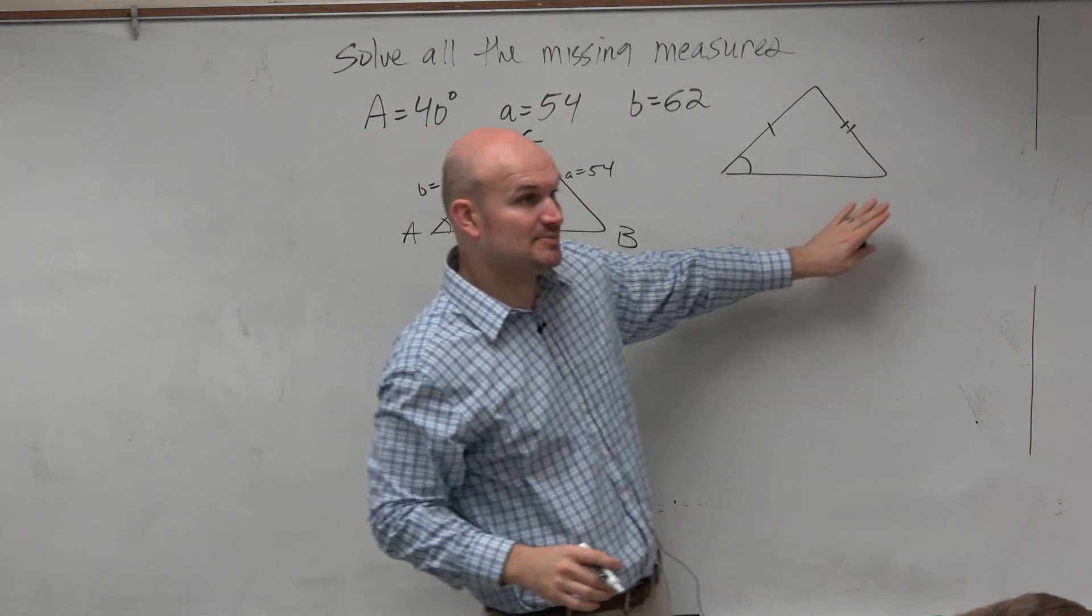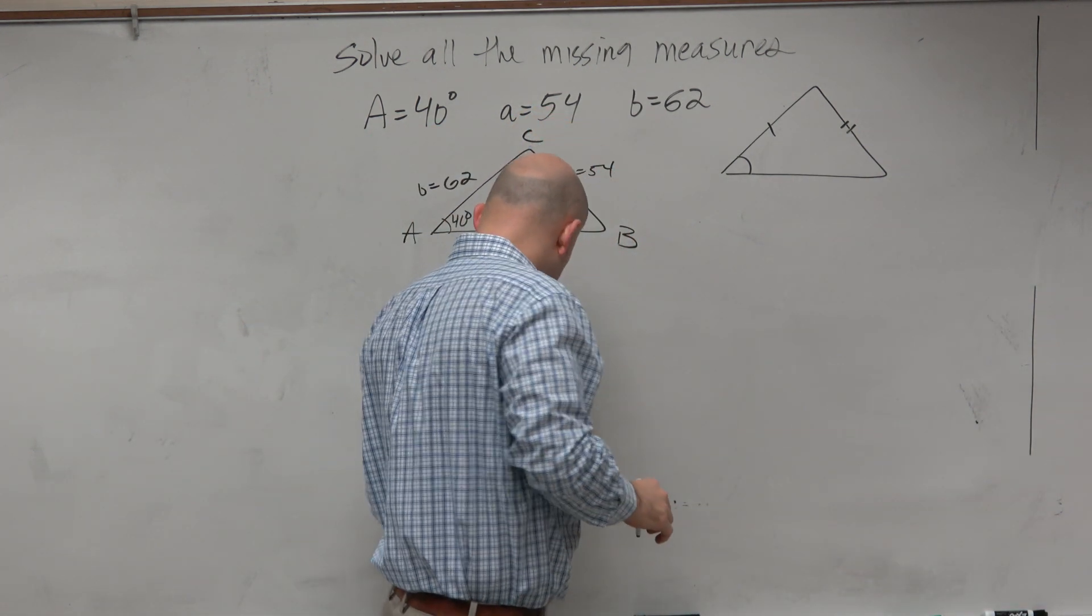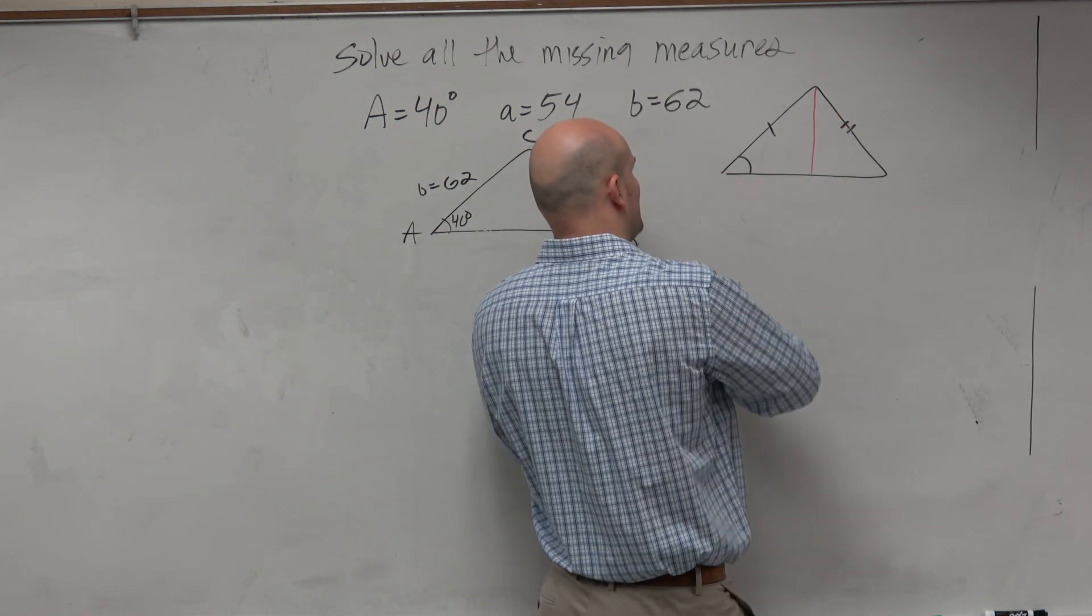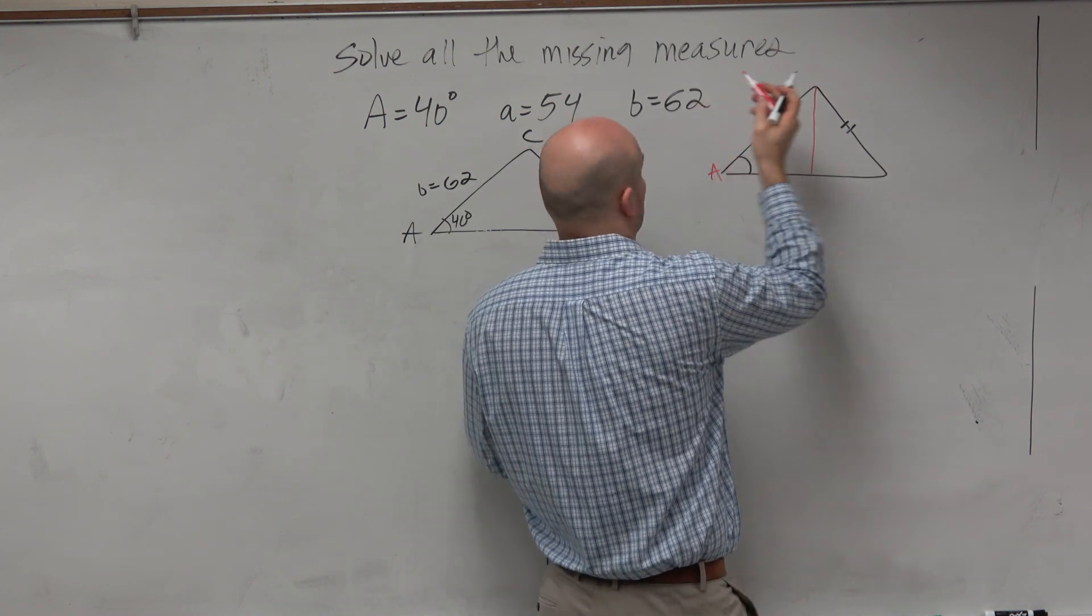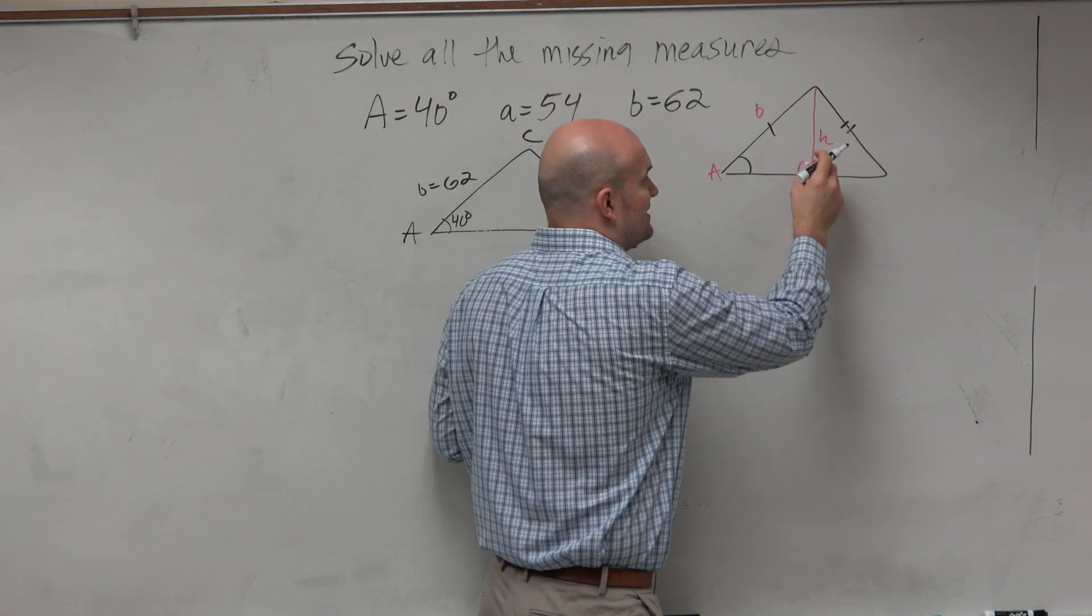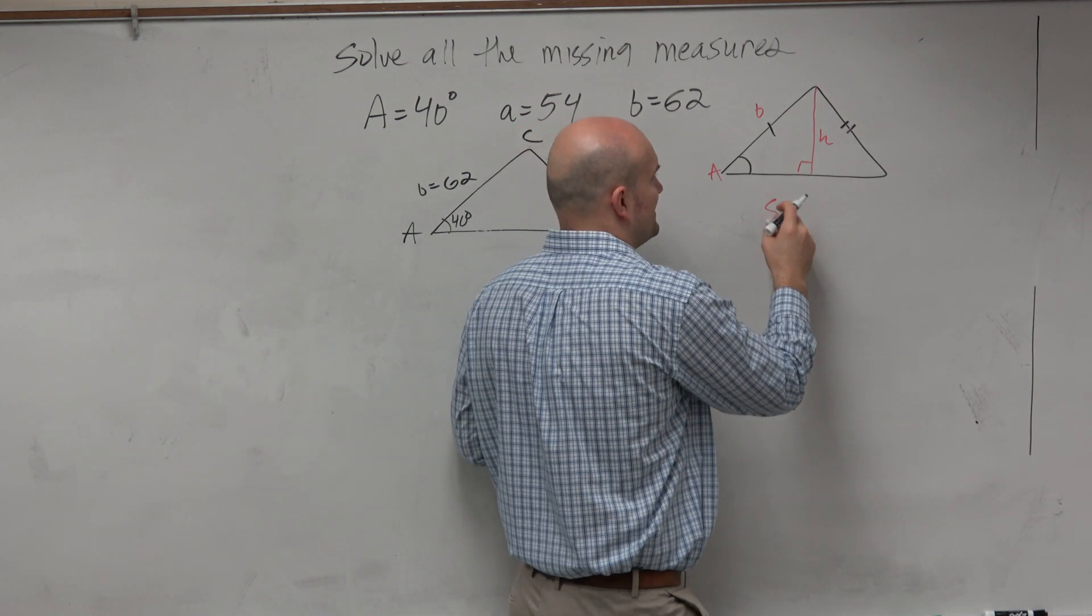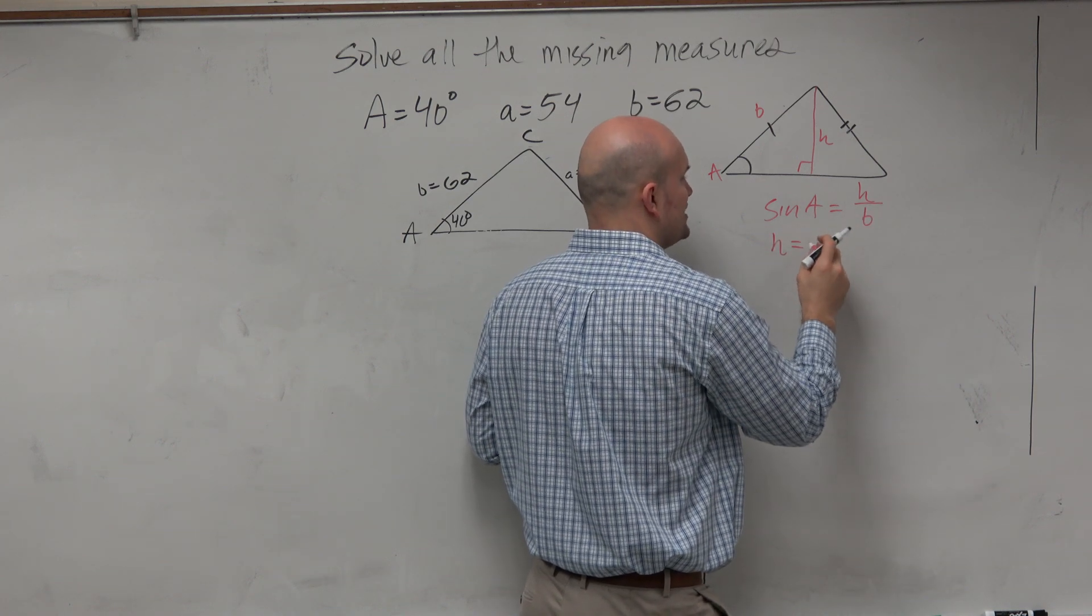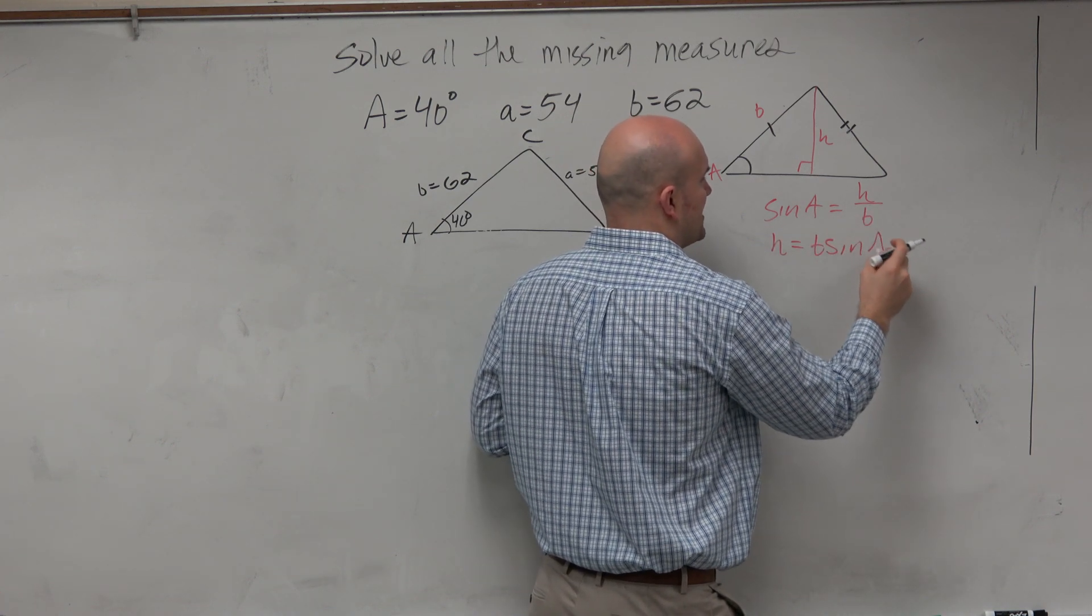What we did last class, if you remember our warmup, I said find the height. So we found the height. Let's call this A and call this B. We said if we're going to find the height, the sine of A equals H over B. So therefore, H equals B times the sine of A.